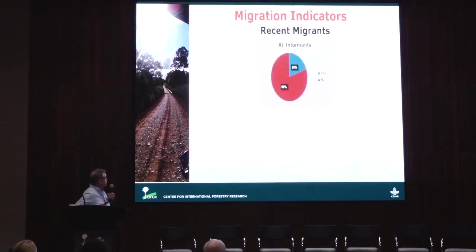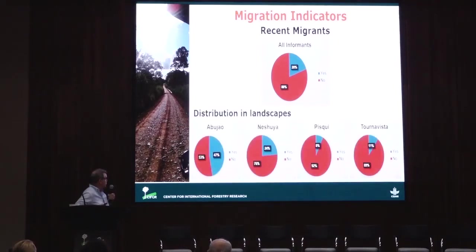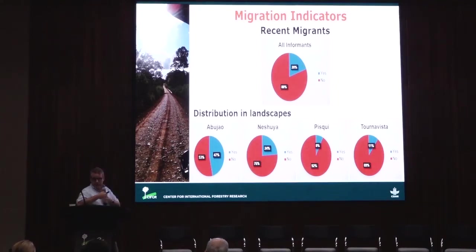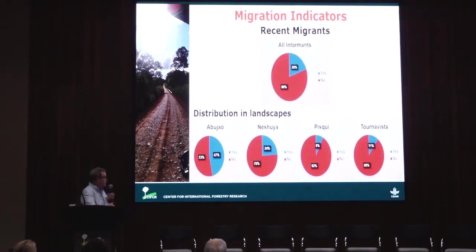When we looked at recent migrants, the story was a little different. There were more recent migrants but not the majority in our samples, and there was variation across the landscapes. Rather than it being primarily the road settlements receiving people, we see that Abohau — representing people moving back after the period of violence — shows up with a lot of recent migrants. Nishuia, also on the road, received recent migrants, but other places like Torna Vista did not have that same pattern. We're still in the process of analysis, so it's very descriptive, but the patterns don't quite match what we expected when distinguishing road-accessible from riverine landscapes.